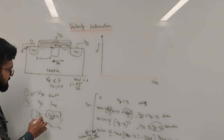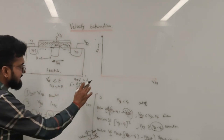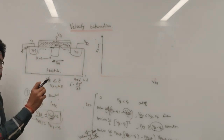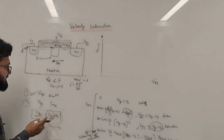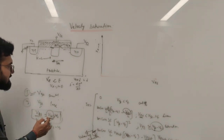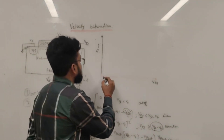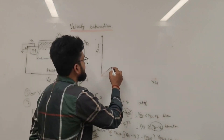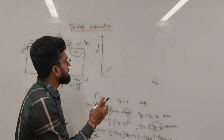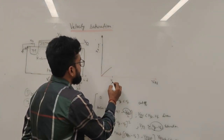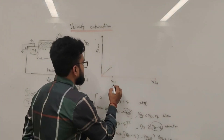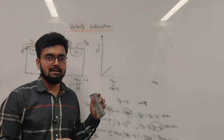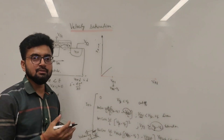If VGS is small, when we sweep VDS we attain saturation earlier — at a lower VDS value. As we increase VDS for a fixed small VGS, the curve is initially linear, then we reach VDS1 equals VGS1 minus VT, which is the edge of saturation for that small VGS.